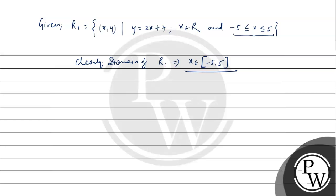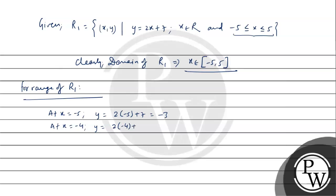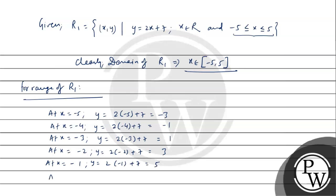Now for the range, the respective y values for each x value will form the set of range. At x = -5, y = 2(-5) + 7 = -10 + 7 = -3. At x = -4, y = 2(-4) + 7 = -8 + 7 = -1. At x = -3, y = 2(-3) + 7 = 7 - 6 = 1. At x = -2, y = 2(-2) + 7 = 7 - 4 = 3. At x = -1, y = 2(-1) + 7 = 7 - 2 = 5. At x = 0, y = 2(0) + 7 = 7.